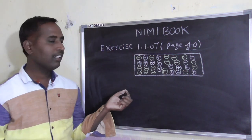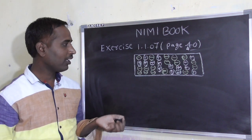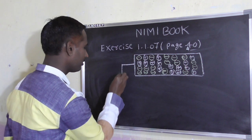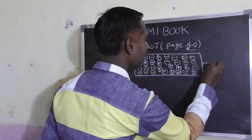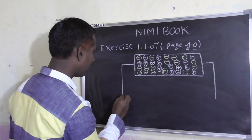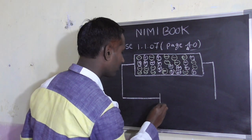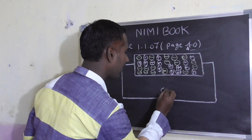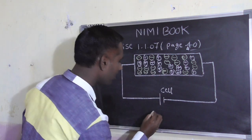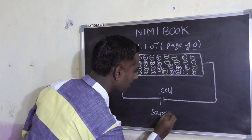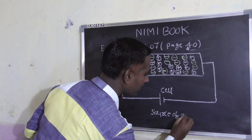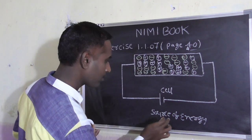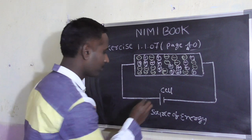यह एक material है। इस material को अभी wire से connect कर देते हैं। Wire को conductor बोलते हैं — conductor से इसको connect कर देते हैं। यह cell है, cell और source of energy, energy source।